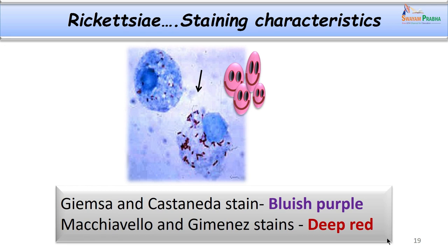We can see them when we stain using Giemsa stain, Gimenez stain, Castañeda and Macchiavello stains. By Giemsa or Castañeda stain they stain bluish purple, whereas they stain deep red by Macchiavello and Gimenez stains.